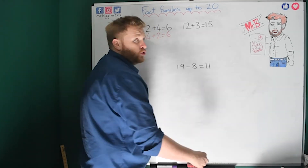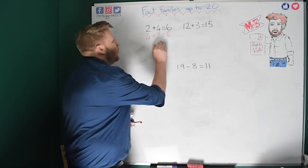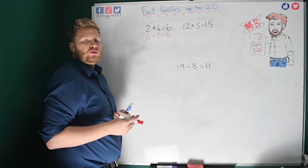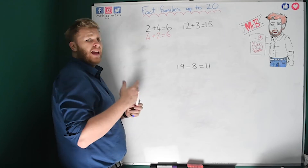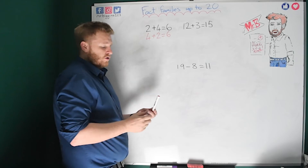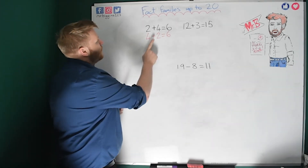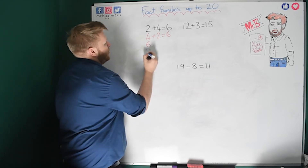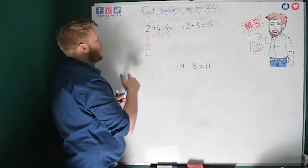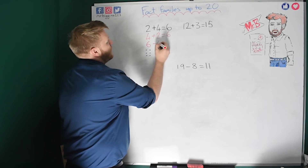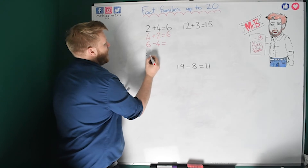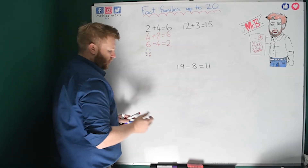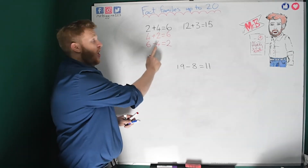We've got 2 additions, but we can also work out 2 subtractions. What's great with the fact family is I have all my numbers already — I know they're going to have a 4, a 2, and a 6. Now with subtraction I have to start with my biggest number. My biggest number is 6, so let's give ourselves 6 dots and take away 4. Crossing 4 out, I have 2 left.